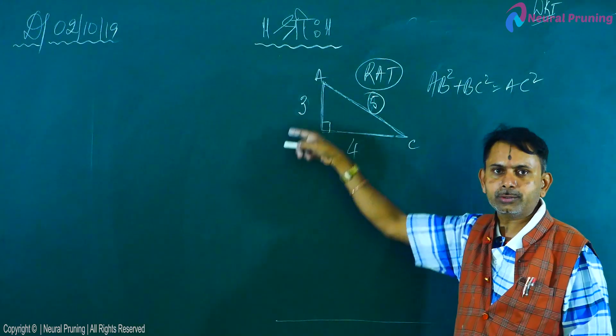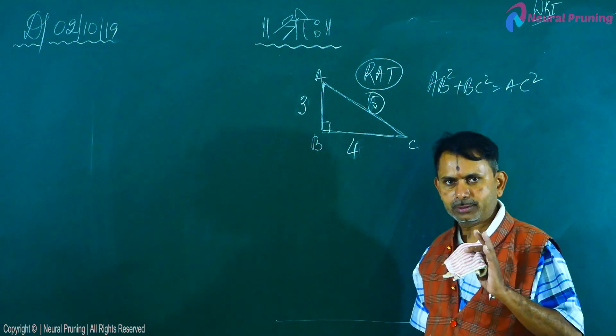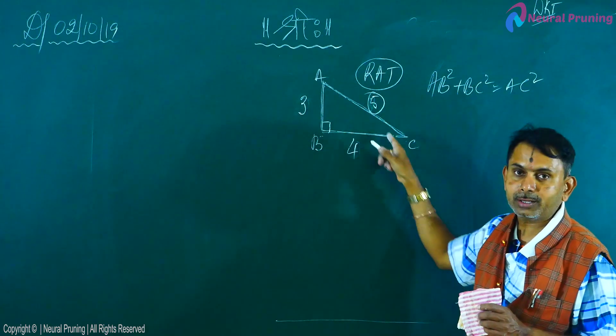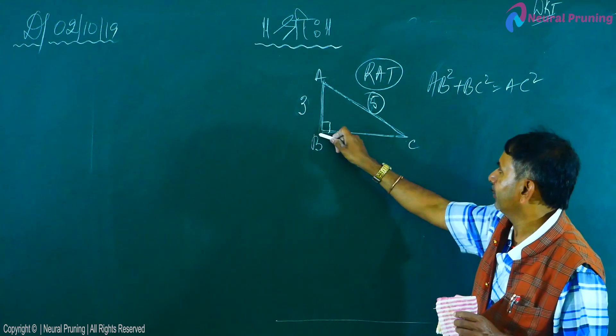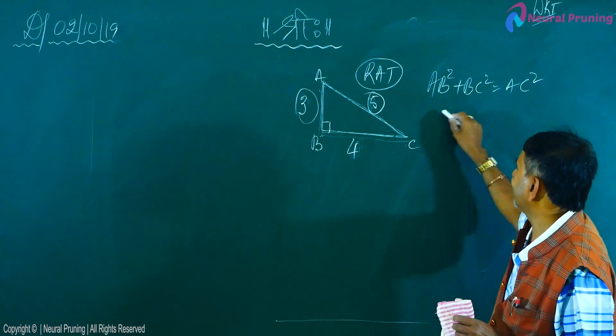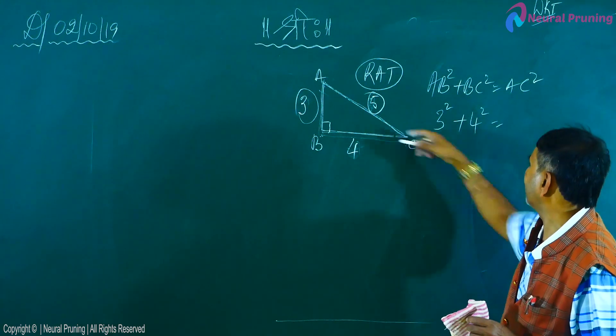Now tell me, according to Pythagoras theorem, AB square plus BC square is equal to what? AC square. Square of the hypotenuse is equal to sum of the squares. Have I become fast? Could you comfortably follow? So, AB square plus BC square is equal to what? AC square. This square plus this square is equal to this square.